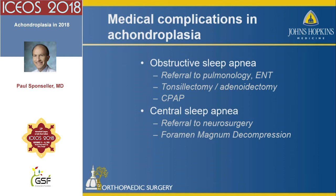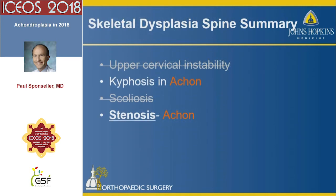Many children who have foramen magnum stenosis early on can grow out of it, but not all, and some need a foramen magnum decompression. If you're familiar with skeletal dysplasia, you know that problems fall along certain themes, including upper cervical instability, thoracolumbar kyphosis, scoliosis, and stenosis.